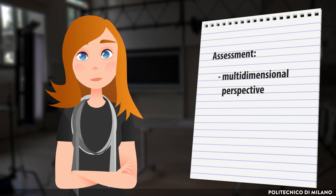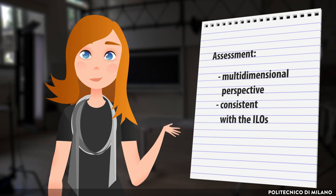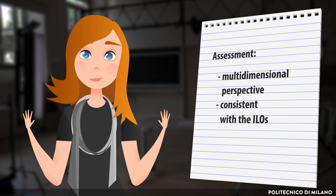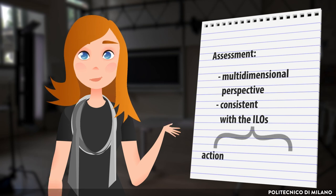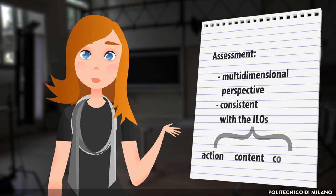Whether individual or in a group, another very important element is that the assessment strategy needs to be very consistent with the intended learning outcomes. So when assessing an intended learning outcome, the assessment test needs to activate the action implied in the intended learning outcome — the student will be able to — in relation to the object indicated and the context that was specified.